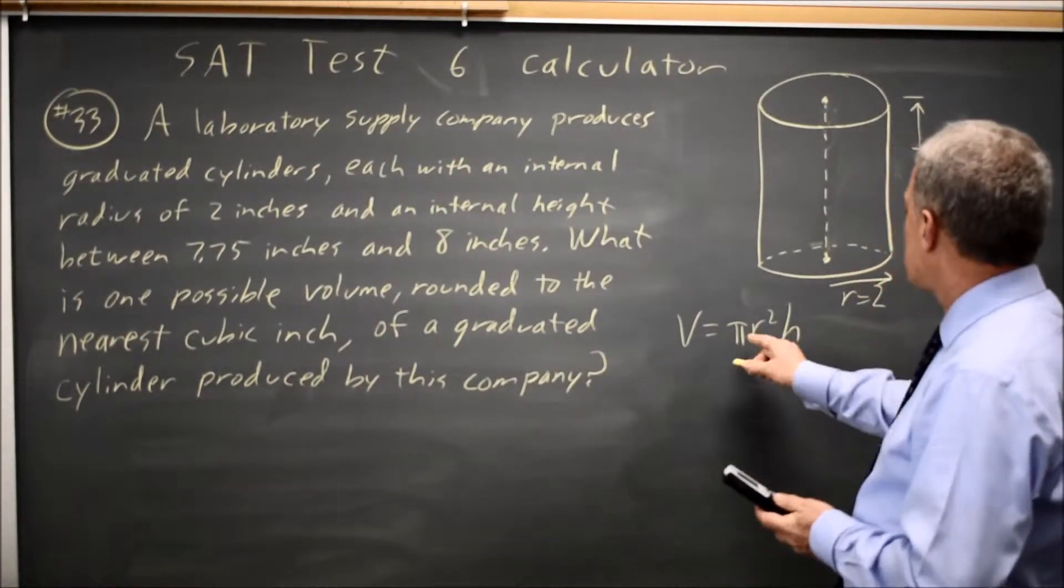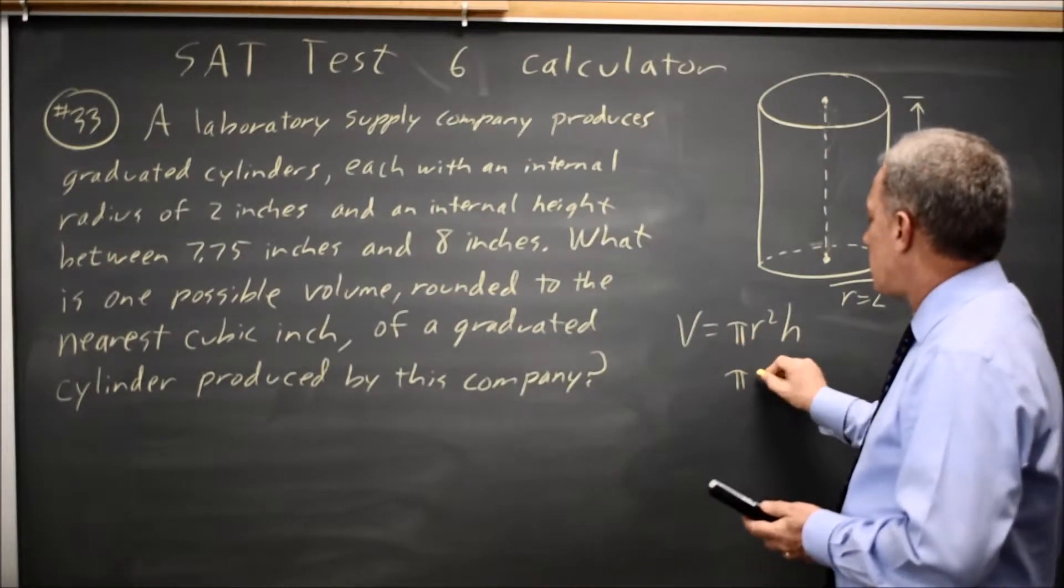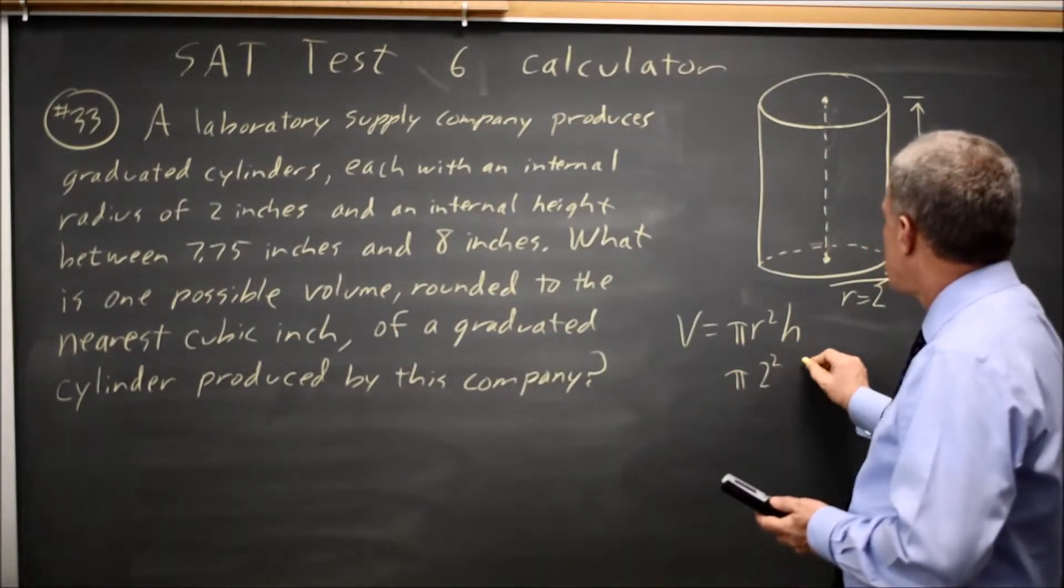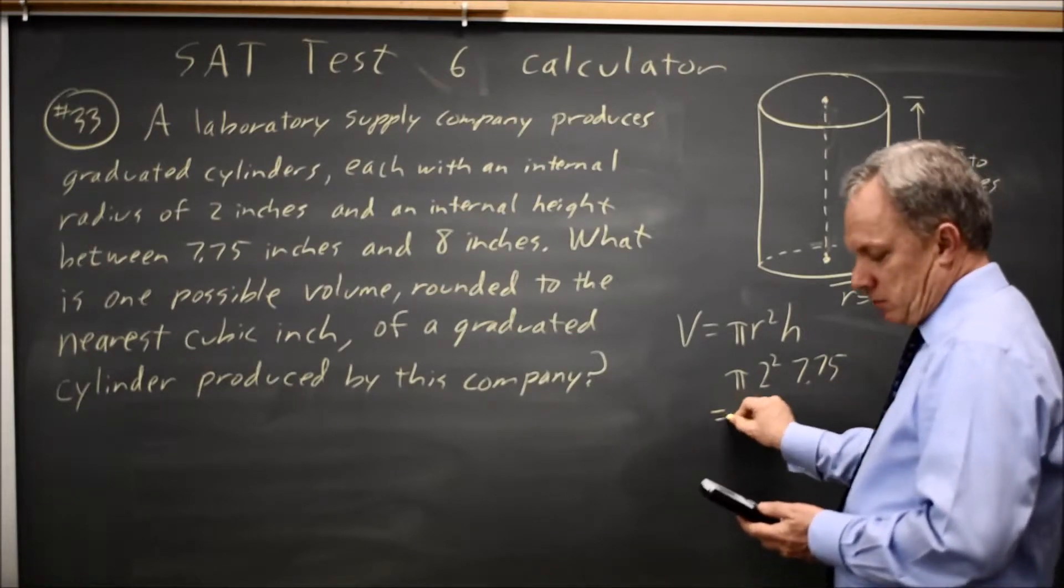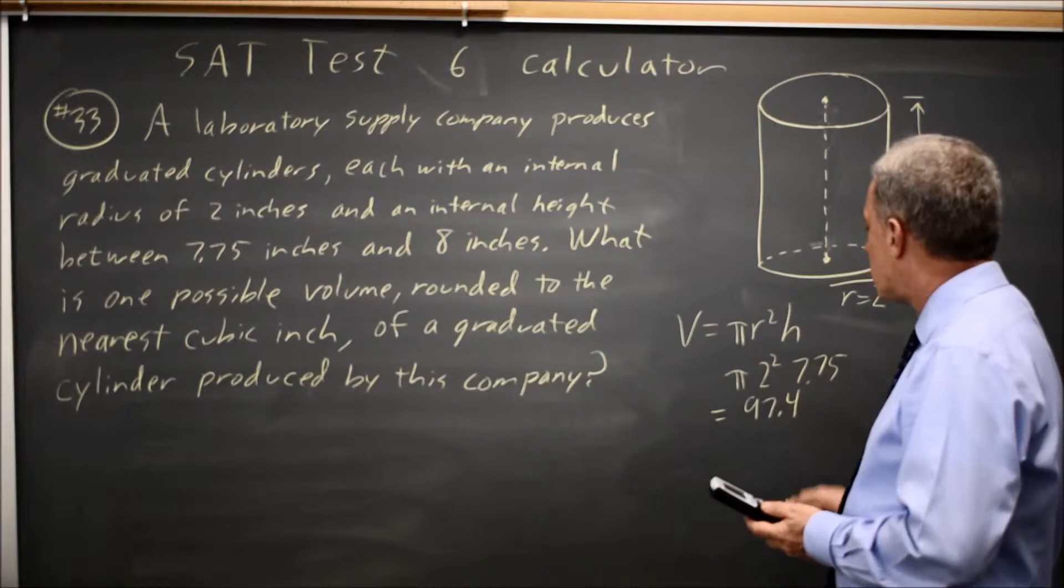Go into your calculator, pi times R is 2 squared, and H is 7.75, gives you 97.4.